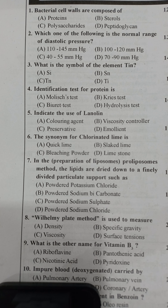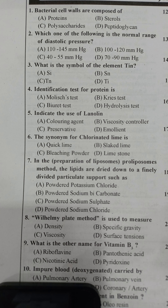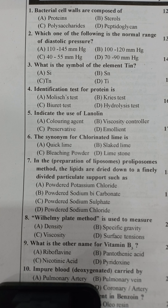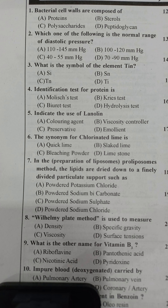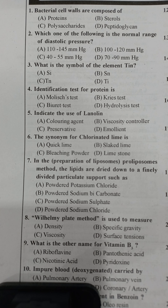In this video, we'll discuss the RRB question paper 2019 for pharmacist. The first question: bacterial cell walls are composed of what? Options include bioproteins, sterols, polysaccharides, and peptidoglycan. The right answer is peptidoglycan.